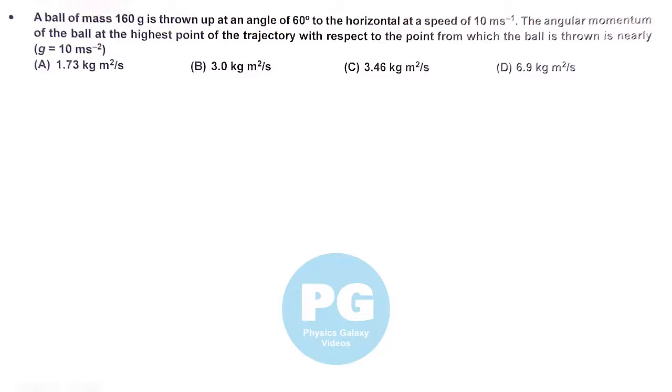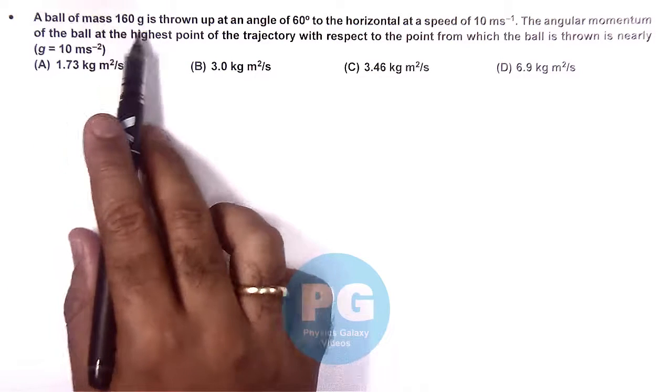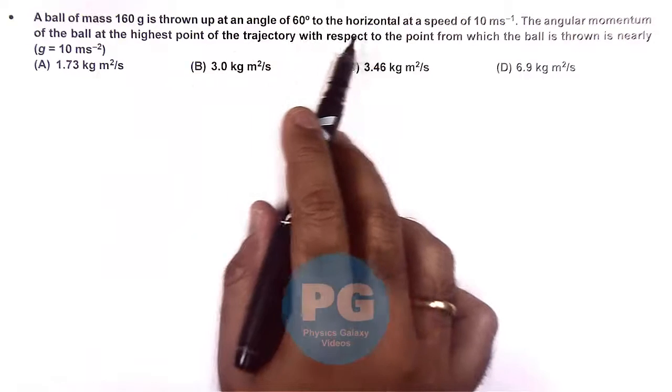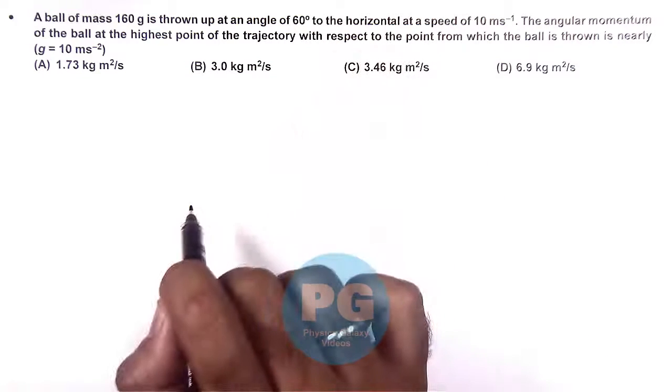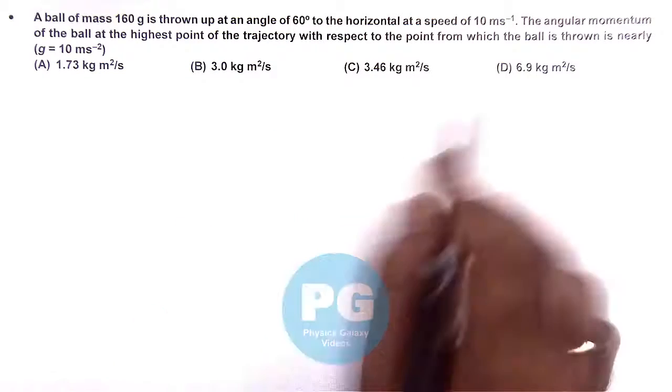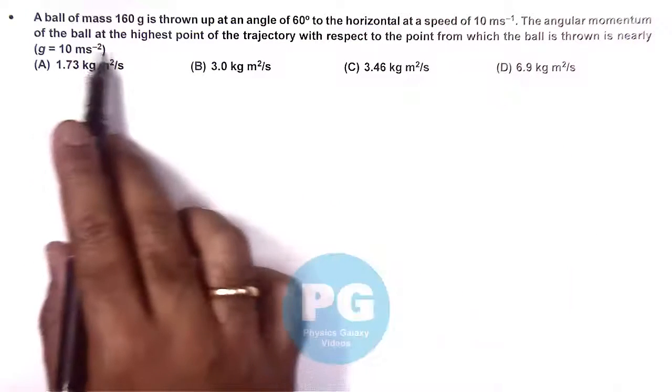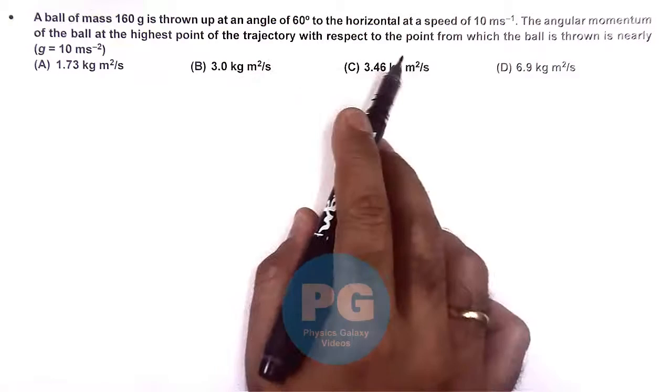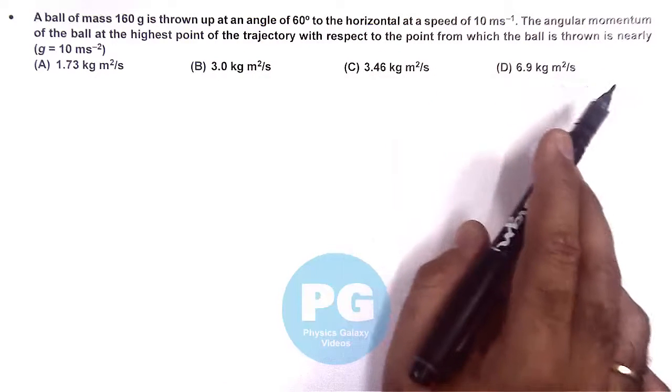In this question we are given that the ball of mass 160 gram is thrown up at an angle of 60 degree to the horizontal at a speed of 10 meters per second. The angular momentum of the ball at the highest point of the trajectory with respect to the point from which the ball is thrown is nearly.